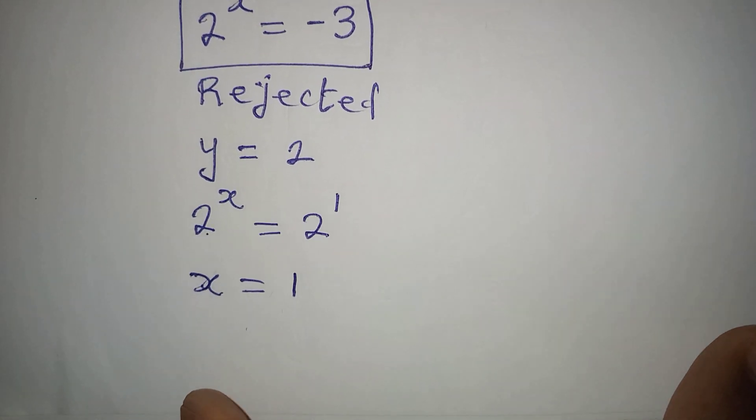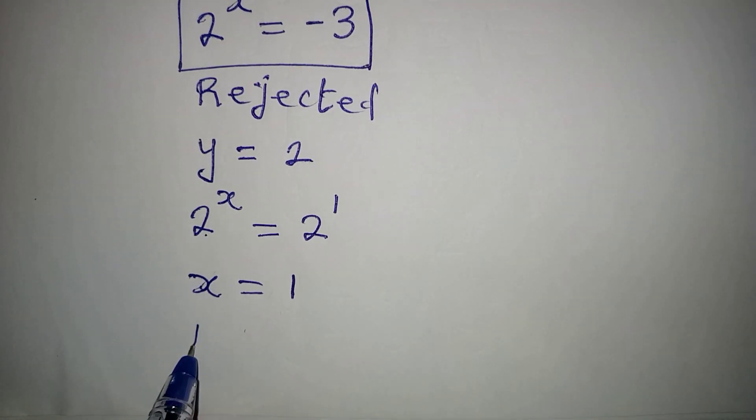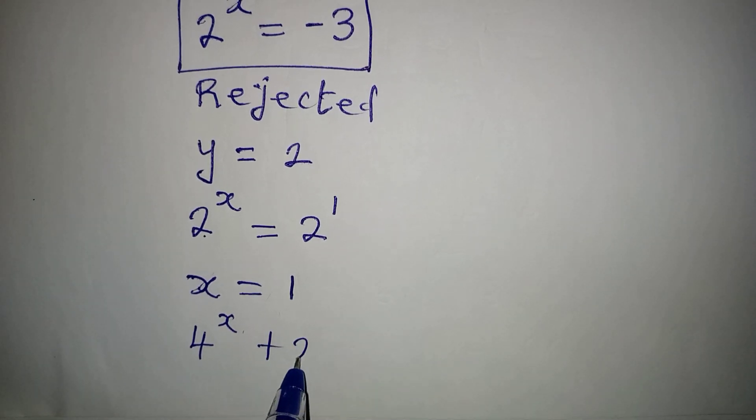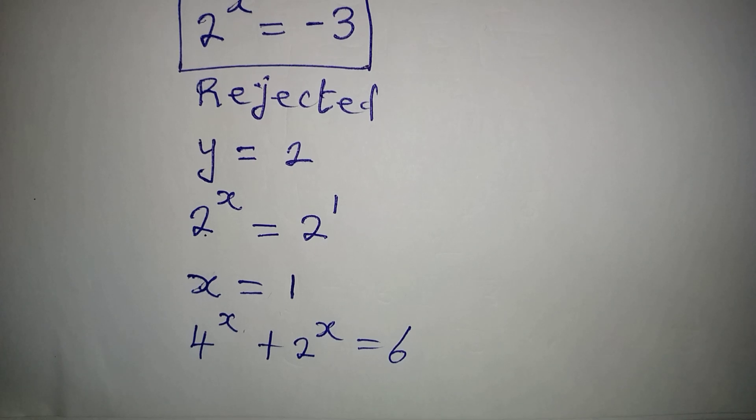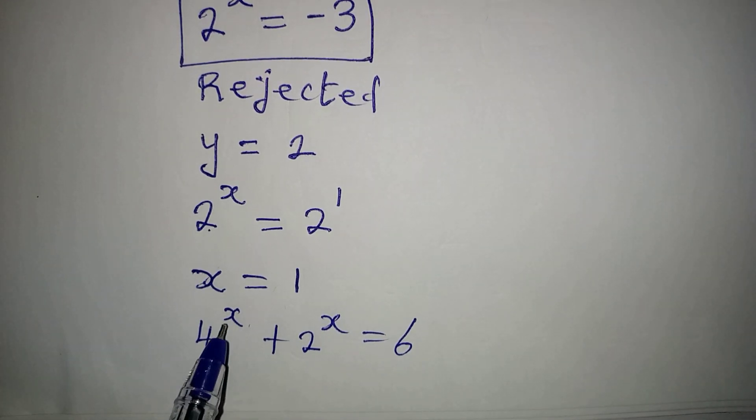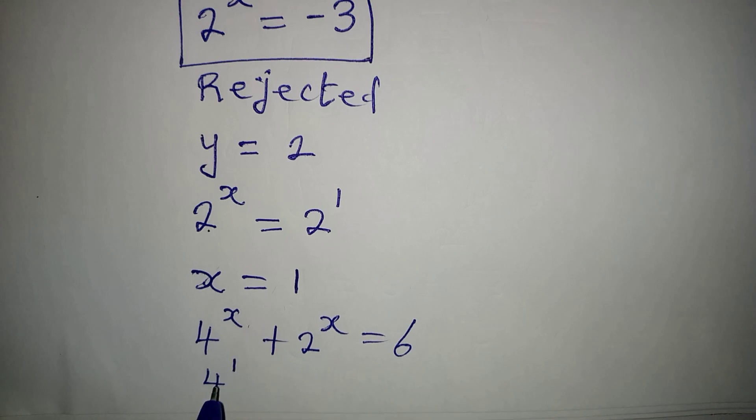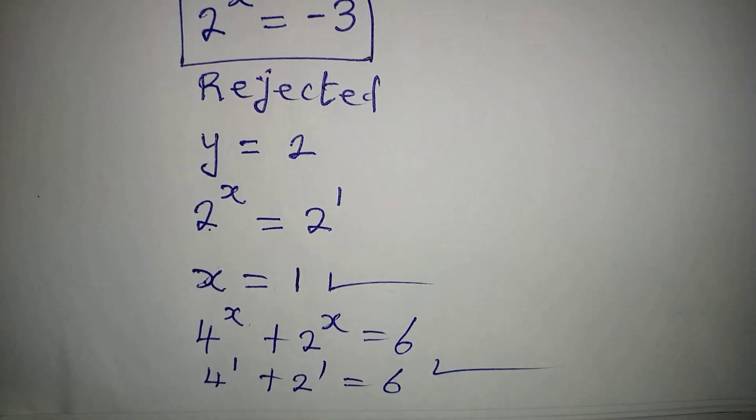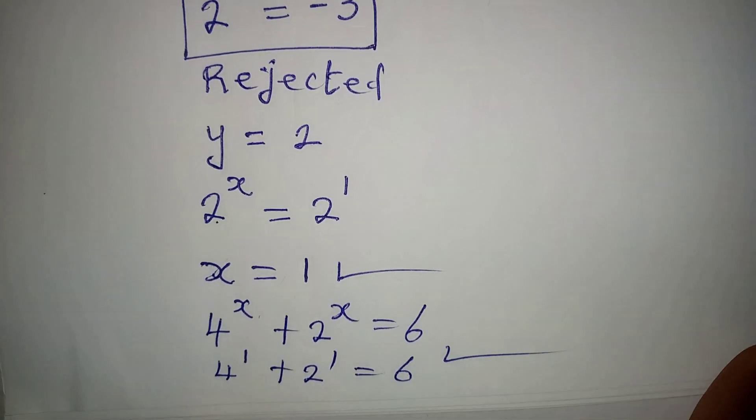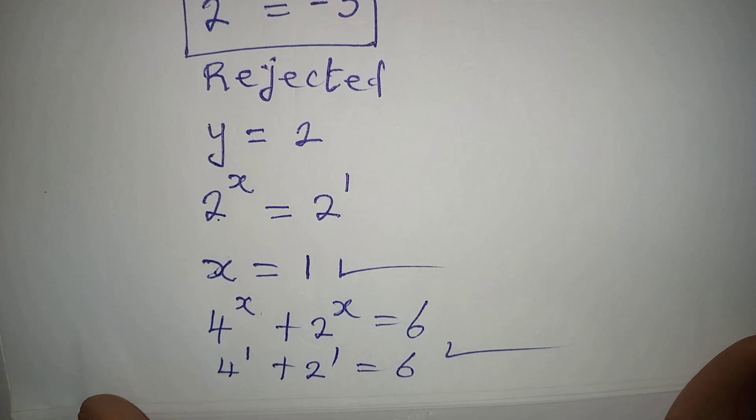Then if you go back to the original equation where we had 4 to the power of x plus 2 to the power of x equal to 6. Now, if you put in 1 into the equation, you have 4 to the power of 1 which is 4, plus 2 to the power of 1 which is 2, and it will give us 6. So we are correct to say that our x is equal to 1. Thank you for watching.